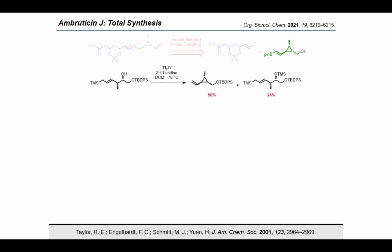Initially, we were pleased to find the activation of the homoallylic alcohol with triflic anhydride afforded the cyclopropane product in a 56% yield, but also 24% of the silylated starting material. This was not a huge issue as it could be deprotected in quantitative yield to return the starting material, which could be fed back into the reaction. However, we wanted to avoid this side product as it's not ideal.